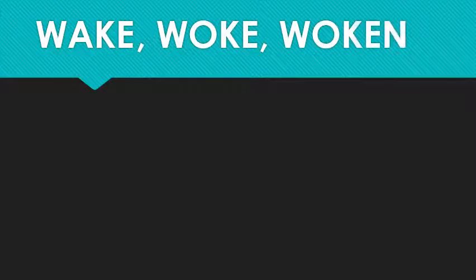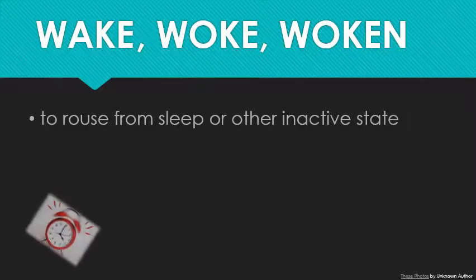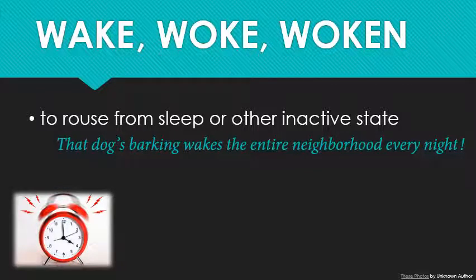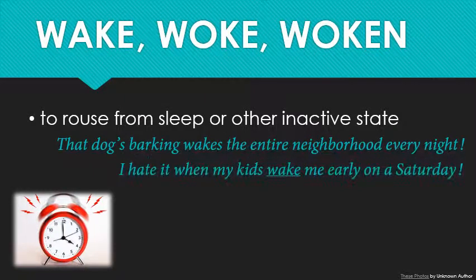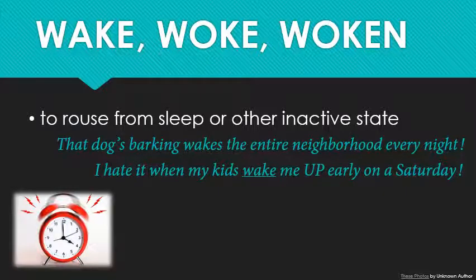Let's start with the most common version: the verb 'wake.' It is an irregular verb because it's just so old. I wake, I woke in the past tense, and I was woken / I have woken. This means to rouse from sleep or another inactive state — to make someone not sleep anymore, to shake them out of bed in the morning. For example: 'That dog's barking wakes the entire neighborhood every night.' Or: 'I hate it when my kids wake me early on a Saturday.' Most of the time we actually say 'wake me up' — the preposition 'up' is typically included.